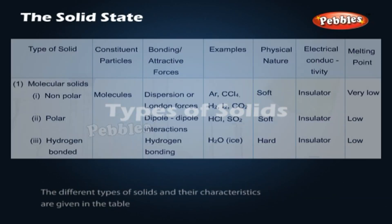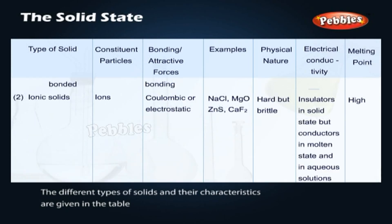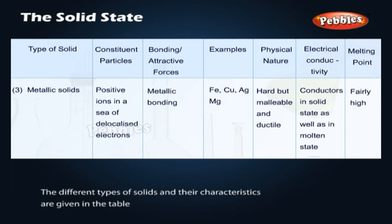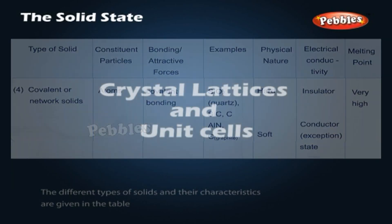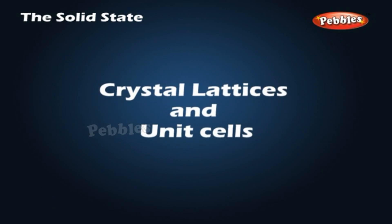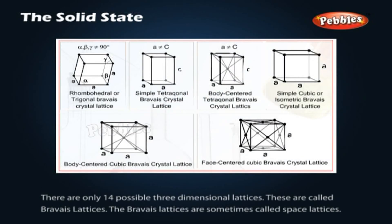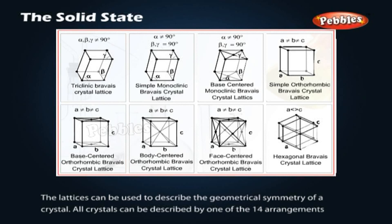Types of solids. The different types of solids and their characteristics are given in the table. Crystal lattices and unit cells. There are only 14 possible three-dimensional lattices, called Bravais lattices, sometimes also called space lattices. The lattices can be used to describe the geometrical symmetry of a crystal.